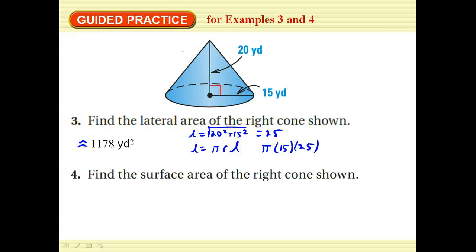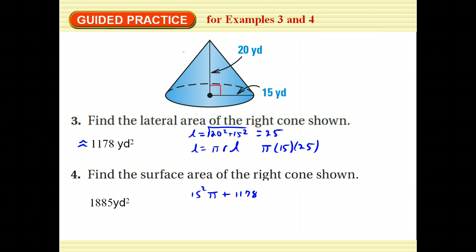To find the surface area of the right cone, if I know the lateral area I just add the base area. The base area is pi r squared, so 15 squared times pi, added to the lateral area of 1178 — and that's how we arrive at the total surface area.